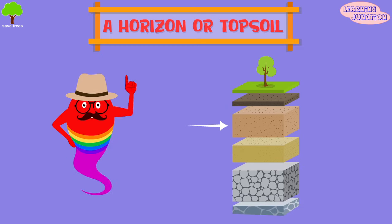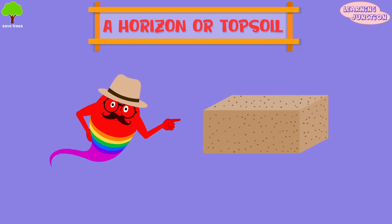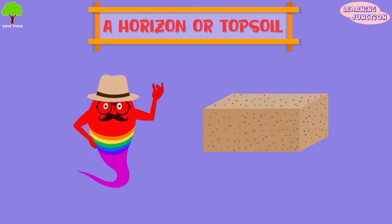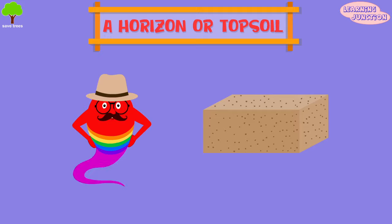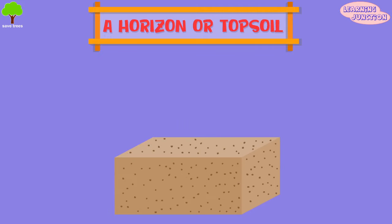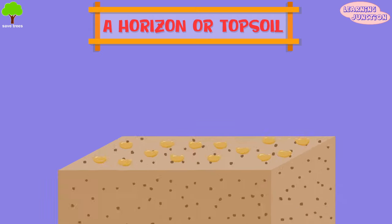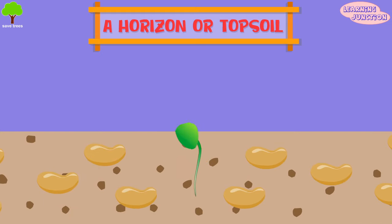A — topsoil. This layer consists of organic matter and decomposed materials. The humus or compost makes the topsoil dark brown, porous, and soft to hold enough water and air. That's why in this layer, the seeds germinate and roots of the plants grow.